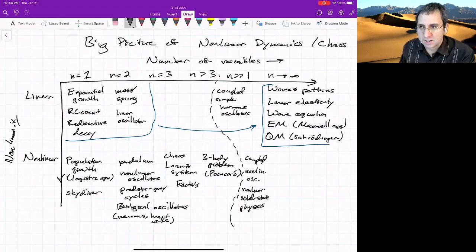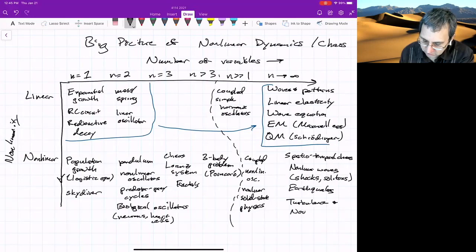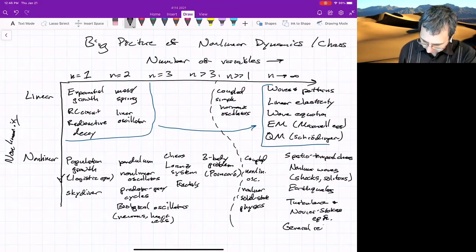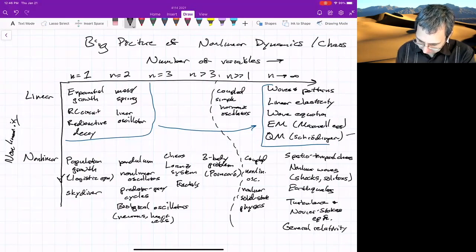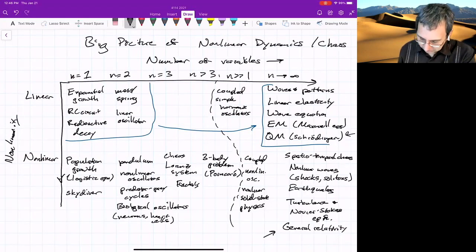If something has infinite variables and it's non-linear, this would be spatial temporal chaos. Instead of the linear wave equation, there are non-linear waves, like shock waves and solitons. Think of tsunamis, earthquakes, turbulence, and the Navier-Stokes equation. So the Navier-Stokes equation is famously the PDE that describes fluids, and it is notoriously non-linear. What else? General relativity is in here. So it's kind of weird, quantum mechanics is up here, it's infinite but linear. General relativity is infinite and non-linear. I guess we could just say life itself, if we ever come up with the rules for life.